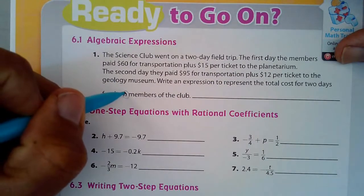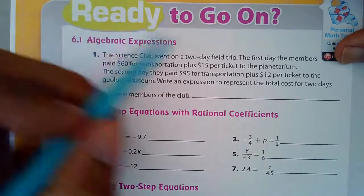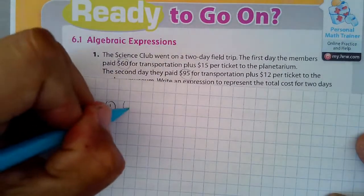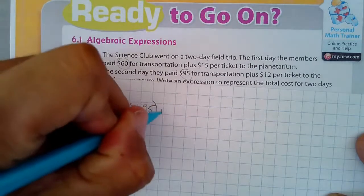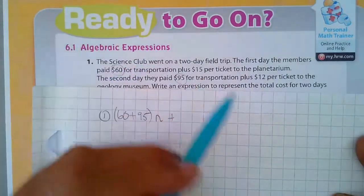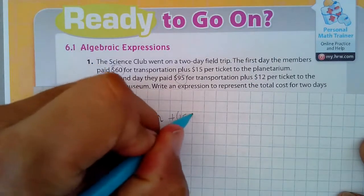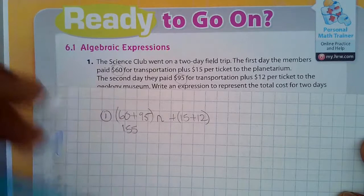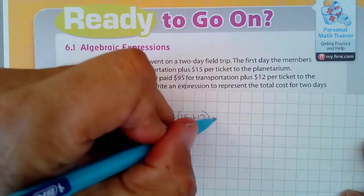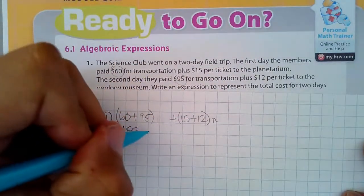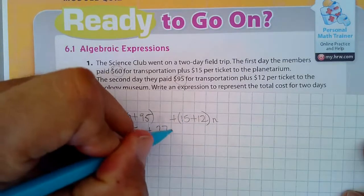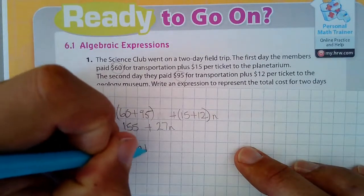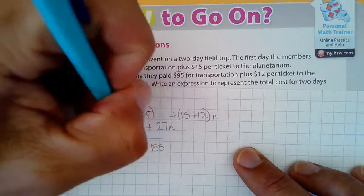So we have n members. We're going to use the variable n and $60 for transportation plus $95. I'm going to write this on a piece of paper here. So for number one, it's 60 plus 95, all of that times n. And then we have plus $15 per ticket and $12 per ticket. So plus 15 plus 12. And together, well that's 155 per ticket. That's going to be 27. Usually we write the variable term first. So that is correct. However, usually it's written this way, 27n plus 155. And so that would be number one.